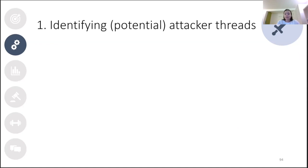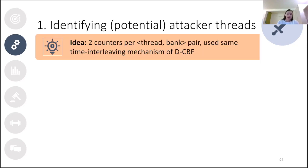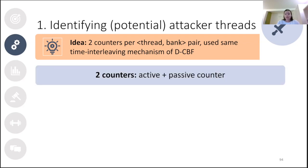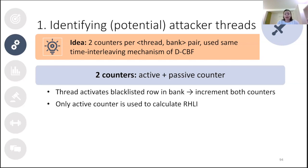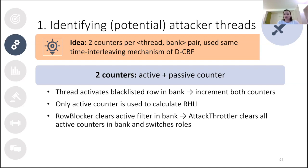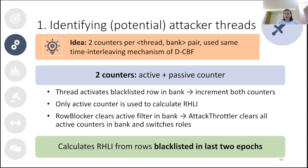On a hardware level, we calculate the RHLI using two counters per thread per DRAM bank, using the same time-interleaving mechanism as the dual counting bloom filter. We have an active and a passive counter; both increment when a thread activates a blacklisted row, but only the active counter is used to calculate the RHLI. Whenever RowBlocker clears its active filter in a bank, Attack Throttler also clears all its active counters in that bank and switches roles — active becomes passive and passive becomes active.